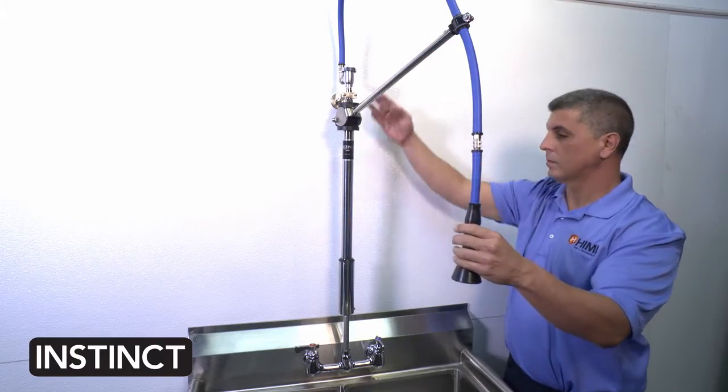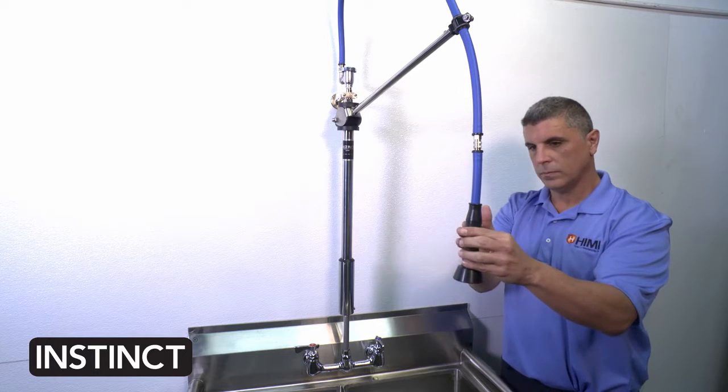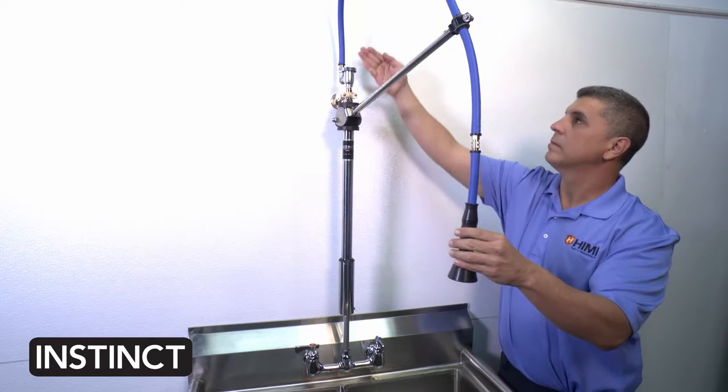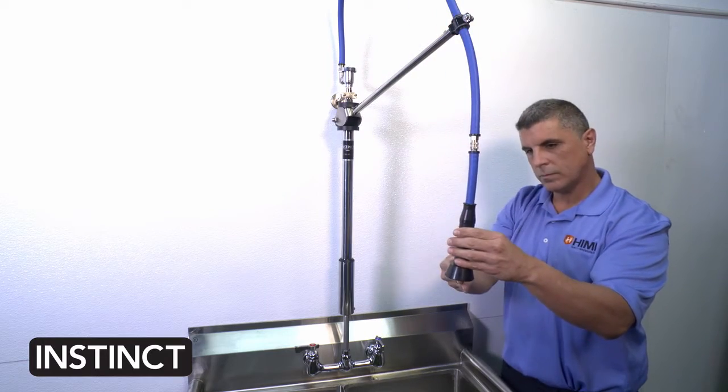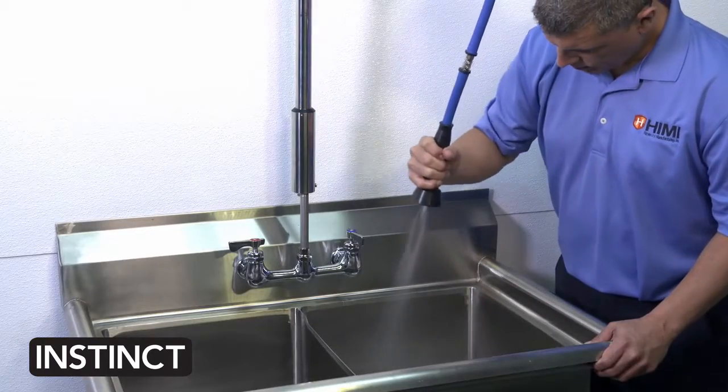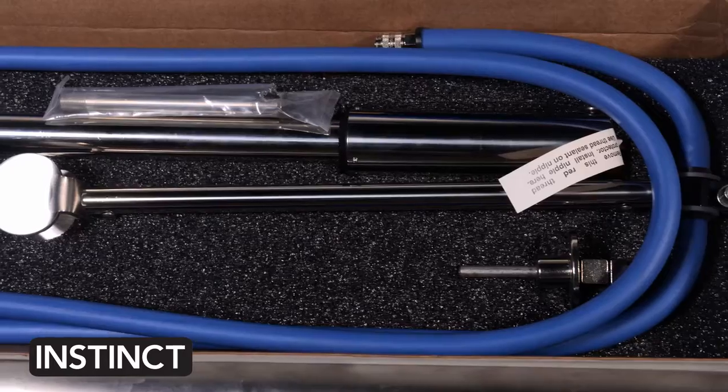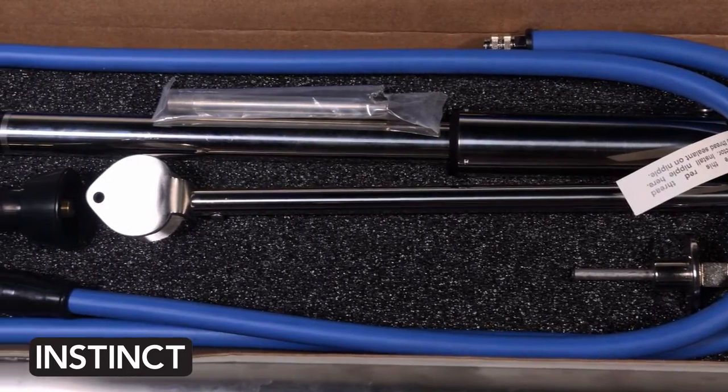We're introducing our no leak technology by transferring the valve from the nozzle to the base of the Instinct faucet, removing the water pressure from the system when it's not in use. This adds years of operational life to the Instinct faucet, which helps with savings on hose replacement costs and buying new units.